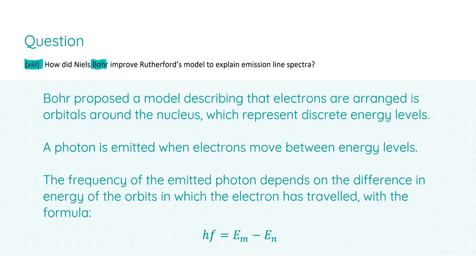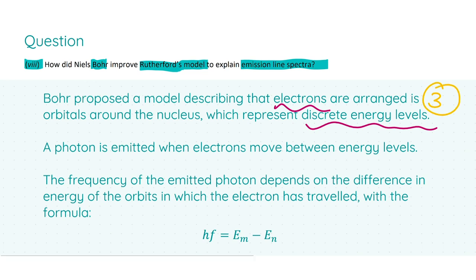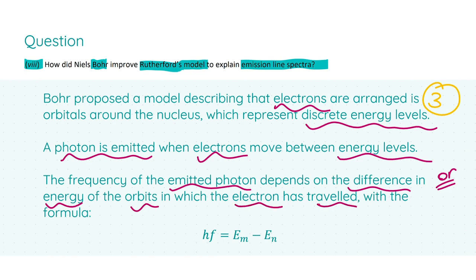In part 8, we're asked how did Niels Bohr improve Rutherford's model to explain line emission spectra. The first thing you'd like to explain is that Bohr proposed a model describing that electrons are arranged in orbitals around the nucleus, which represent discrete energy levels. This will give you your first three marks. For your next three marks, you can either explain that a photon is emitted when electrons move between energy levels, or you could state that the frequency of the emitted photon depends on the difference in energy of the orbits in which the electron has traveled, with the formula hf equals E_M minus E_N.